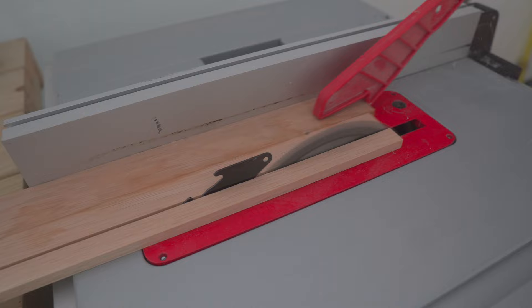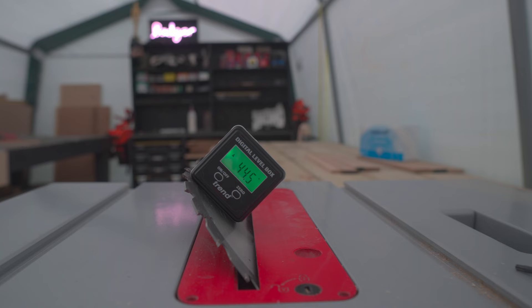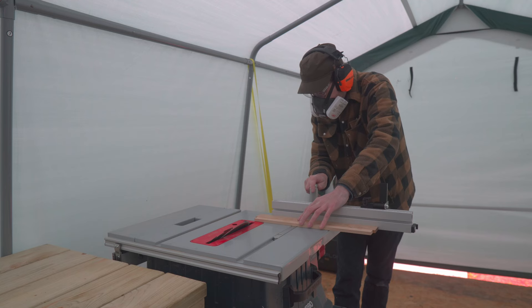I want to join this together using mitered corners, so I bust out my trend miter box, get that put on the blade, and get it tilted over to 45 degrees. They've been linked down below on the tools I use page, this handy little device. Now I can get the miter gauge set up, and start cutting the pieces.